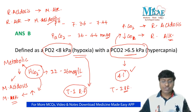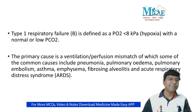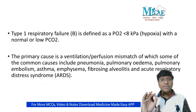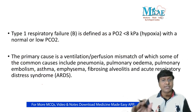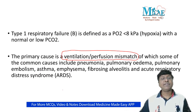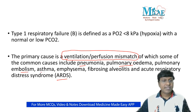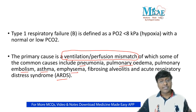The answer is type 1 respiratory failure. Type 1 respiratory failure occurs whenever there is a ventilation-perfusion mismatch. Important causes include ARDS, pulmonary edema, pneumonia, pulmonary embolism, and the initial stages of asthma and emphysema.